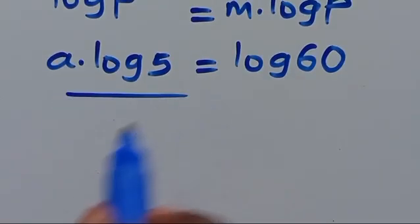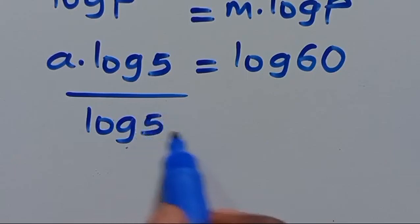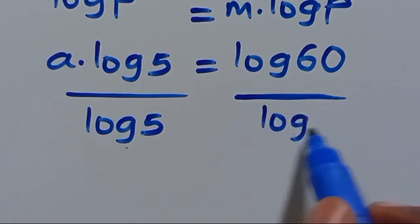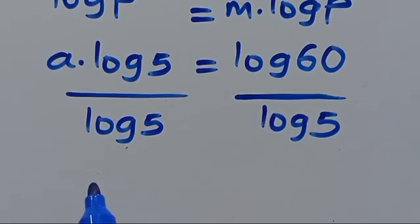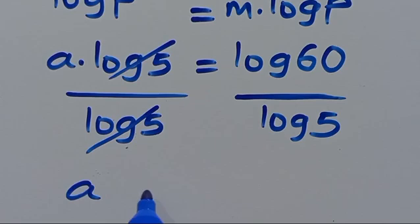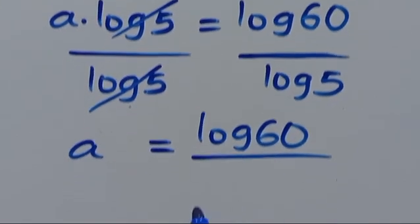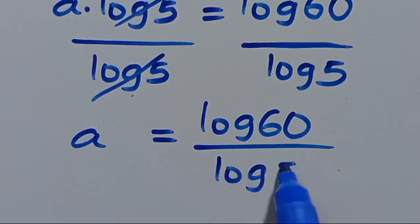Then from here, let's divide both sides by log 5. This will cancel out, and we are going to have A equals log 60 divided by log 5.